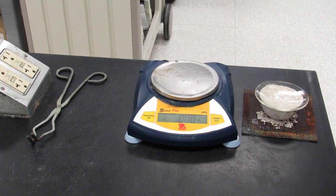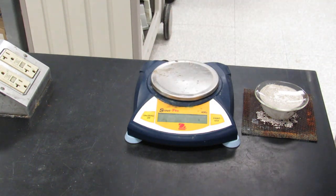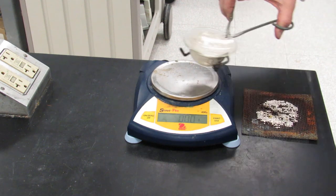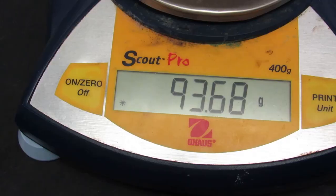So, go ahead and make sure you zero the balance. And then put your evaporating dish with the watch glass on top of the balance. And then get a mass.